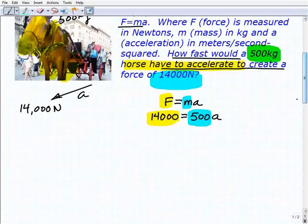Now, if you don't like the way this looks, it's equivalent to this: 500 times a equals 14,000. Sometimes students get a little hung up that the variable's on the right-hand side. It doesn't make a difference whether the variable's on the right-hand side or the left-hand side. The same procedure is still going to take place.